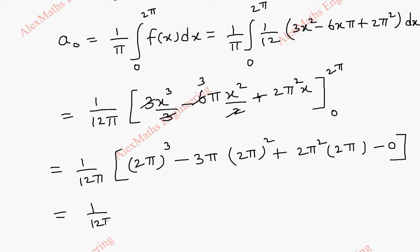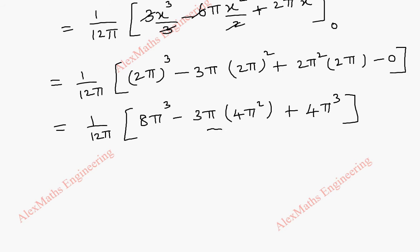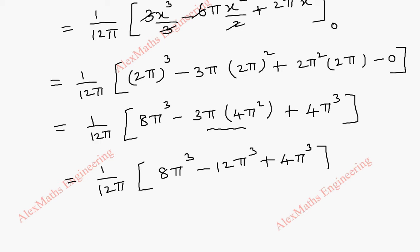Now this is 1 by 12 pi. The first term is 8 pi cubed. Taking 4 pi cubed for individual terms, the second term is 3 pi times 4 pi squared, and the third is again 4 pi cubed, giving a total of minus 12 pi cubed. So 1 by 12 pi times the quantity 8 pi cubed minus 12 pi cubed plus 4 pi cubed. Since 8 plus 4 is 12, and 12 minus 12 is 0, a0 is 0.